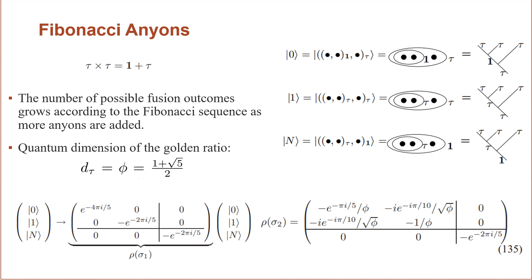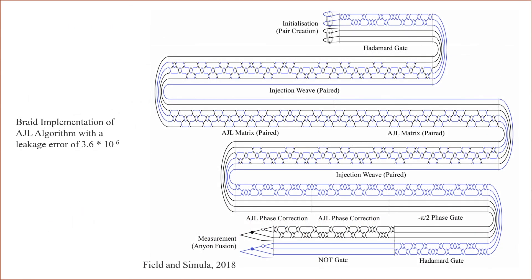These anyons are called Fibonacci because the number of possible fusion outcomes grows accordingly to the Fibonacci sequence as more anyons are added and they have a quantum dimension of the golden ratio.